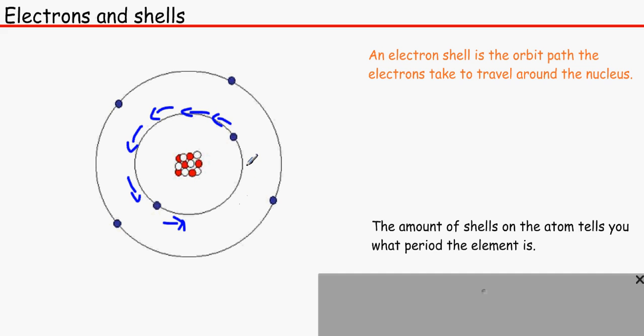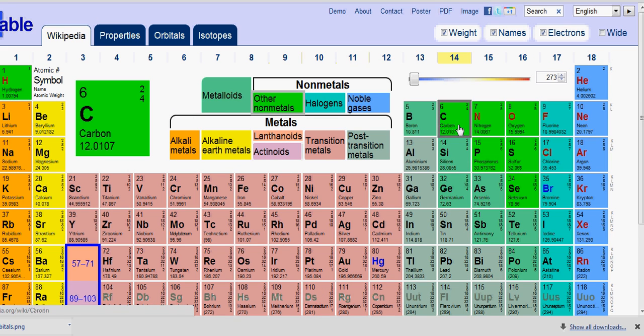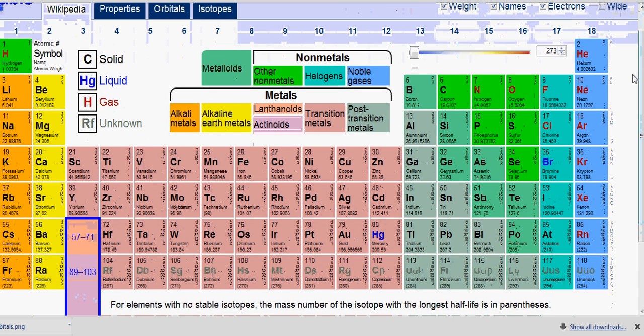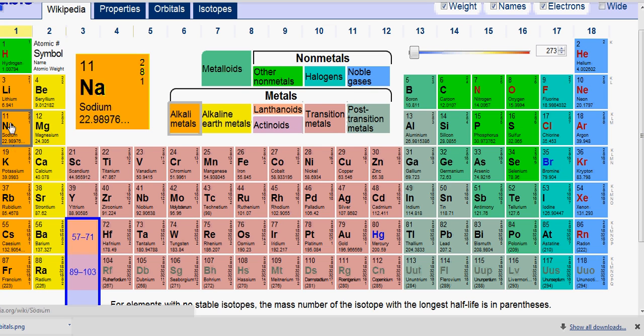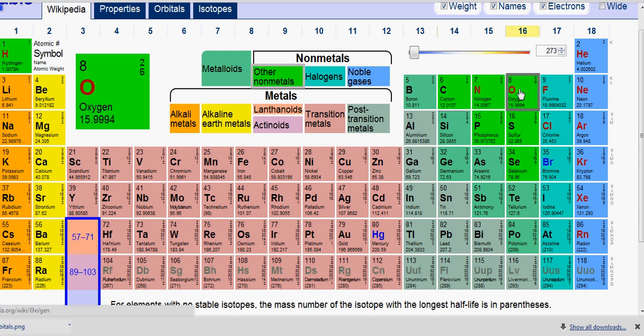The amount of the shells on the atom tells you what period the element is on. So for example, this has got 2 shells, 1, 2 right? And over here on this periodic table at ptable.com, 2 shells means that it could be any of these elements on the second row.